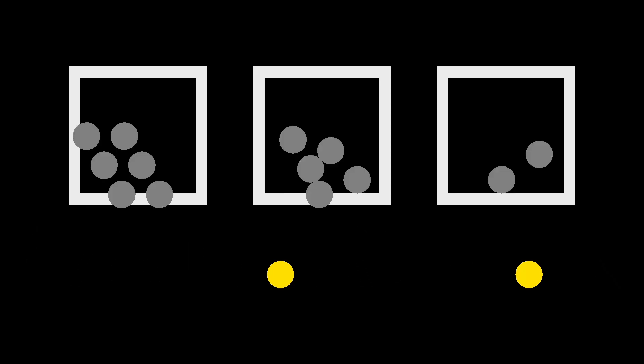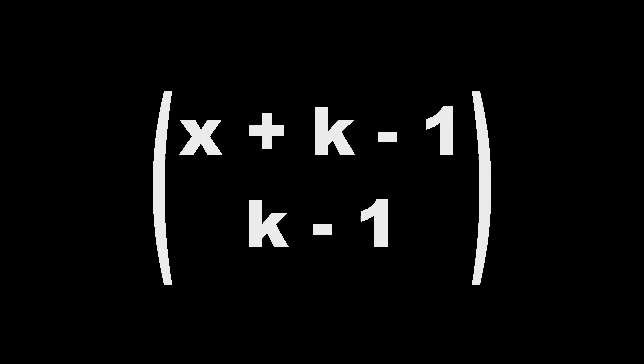It turns out that we can use our n choose r formula here too, since all we're doing is choosing two golden balls out of our line. In our example, this is 15 choose 2, or 105 combinations. Let's formalize this into a formula. Let's call the total we're trying to get x, and the number of boxes k. Now, our formula is just x plus k minus 1 choose k minus 1.